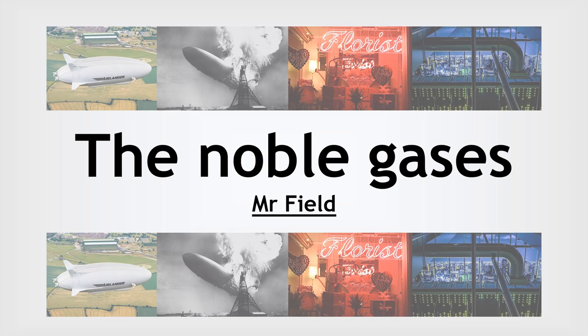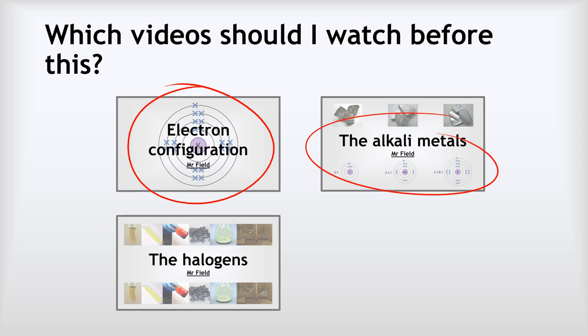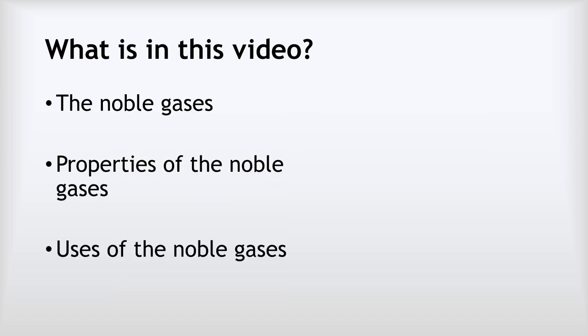Hello, this is Mr. Field and this video is about the noble gases. Before you watch this, make sure you're confident on how to determine electron configurations. The alkali metals and the halogens have got videos on all of those things earlier in this playlist if you need to brush up on those. In this video we're going to look at what the noble gases are, their properties, and then their uses.